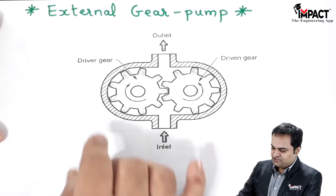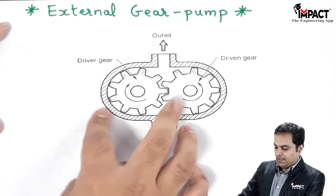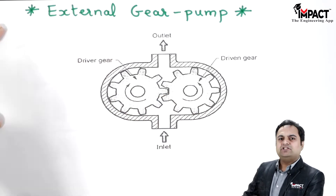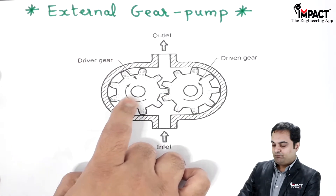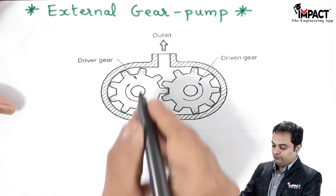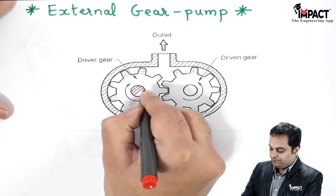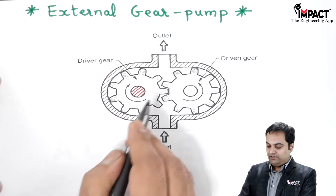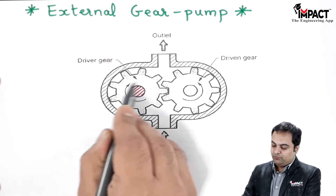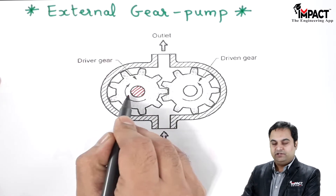Here we have a driver gear and a driven gear — both are in mesh. Power is provided to the driver gear with the help of a motor. There is a shaft of the driver gear which is connected to the motor shaft, giving power to this shaft. When this shaft starts rotating — the direction is assumed to be clockwise — the driver gear starts to rotate.